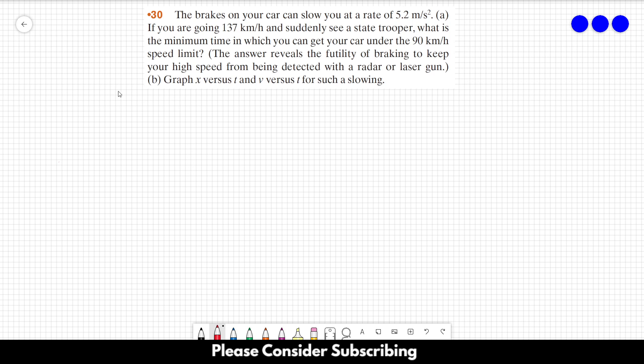So the first thing that we have to do is to gather the information that we already have. So we know that the acceleration is equal to 5.2 meters per square second. However, we are decreasing the speed of the car. So we have to add the minus sign over here because it's a deceleration.